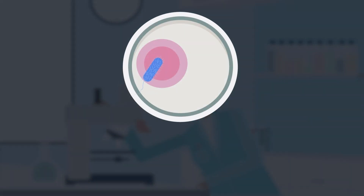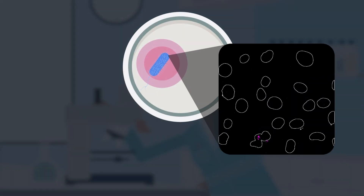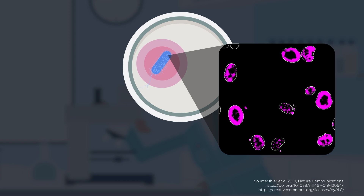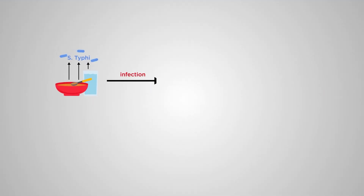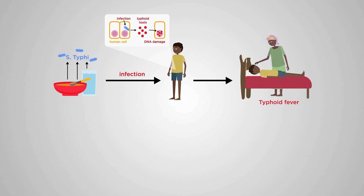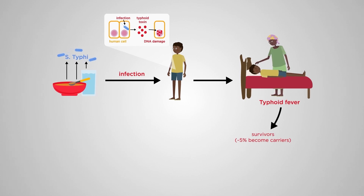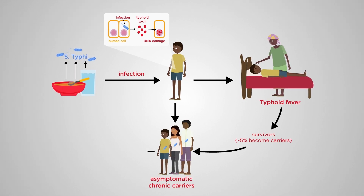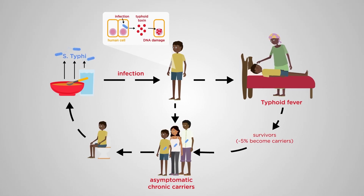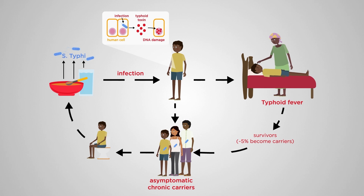Can the presence of senescence biomarkers increase the effectiveness of diagnostic surveillance to help control typhoid? By discovering how infection works, we'll be better placed to discover new strategies to control typhoid and eventually eliminate Salmonella typhi from the planet.